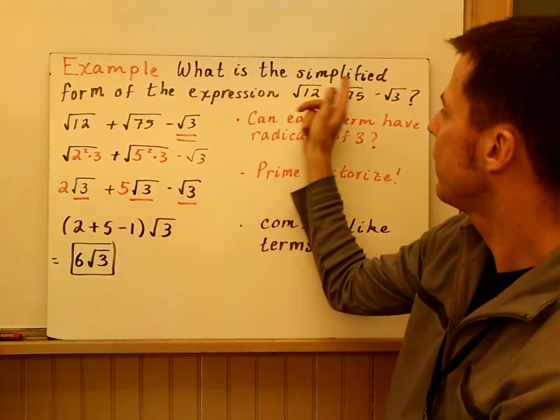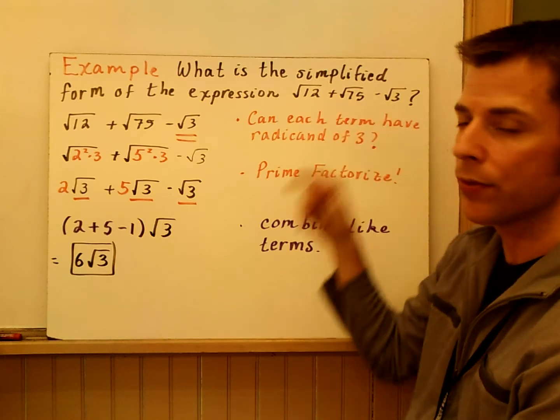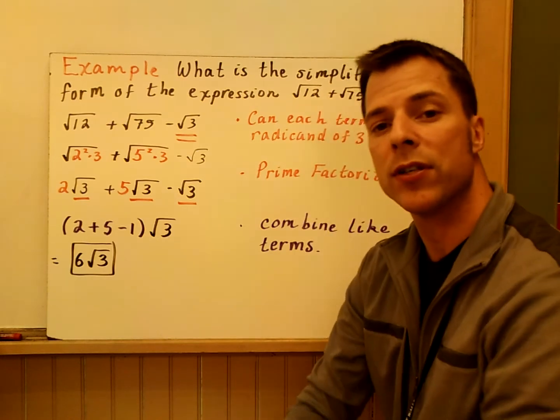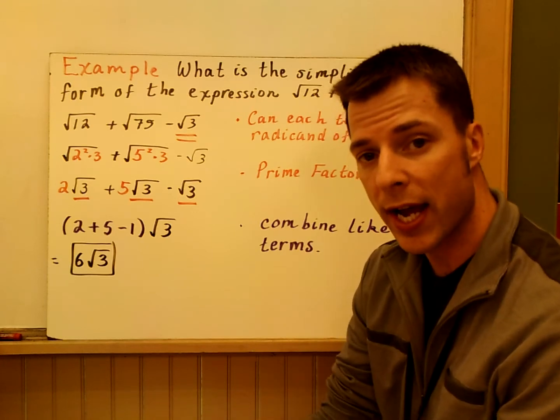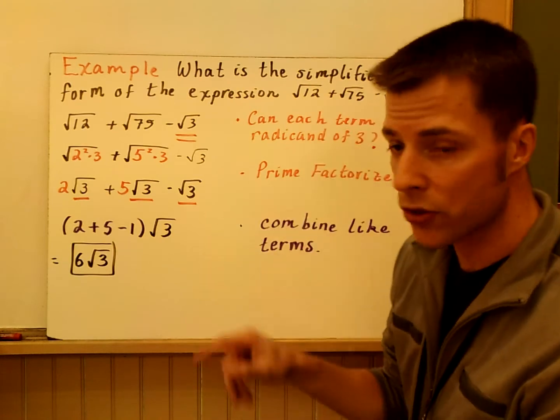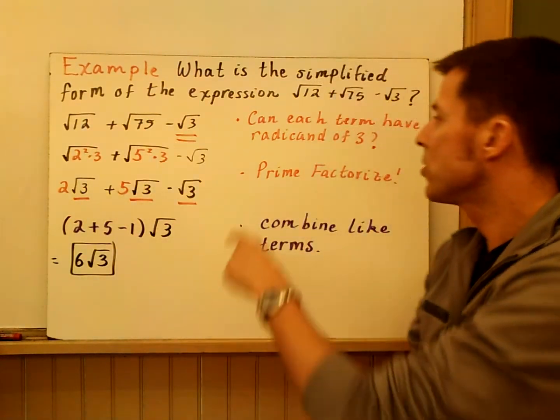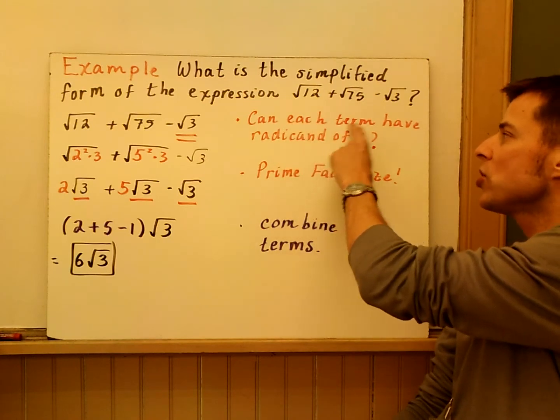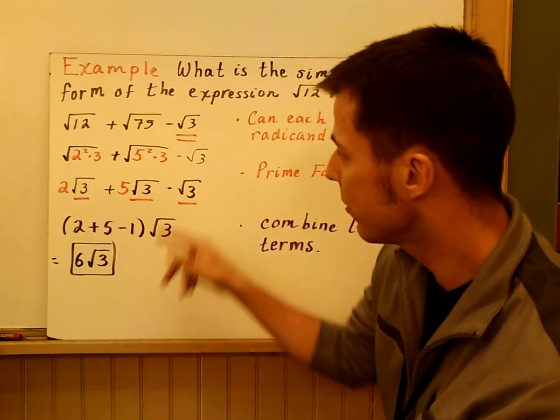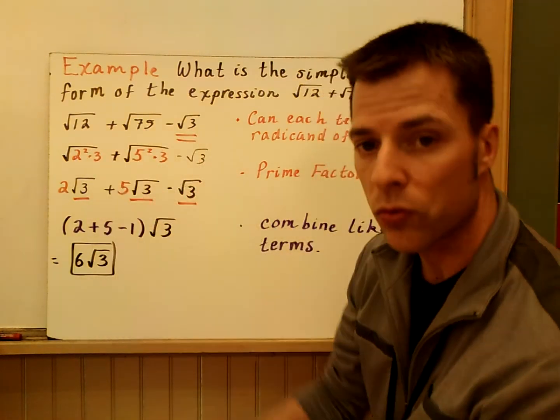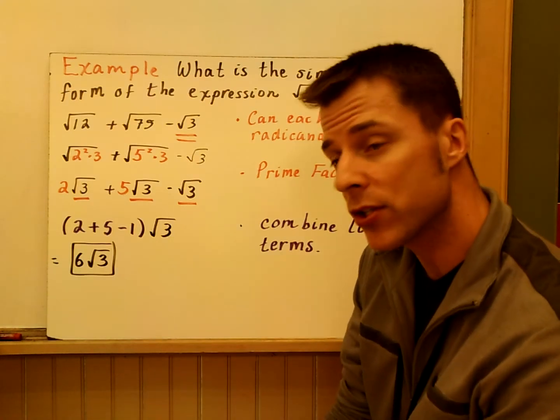What is the simplified form of the expression root 12 plus root 75 minus root 3? This is where you have to use that second part of the essential understanding and simplify before you add. Right now, you would say, well, they're all roots. They're square roots, but I can't combine them because they all have different radicands. So the idea becomes, can each term have a radicand of 3? The reason why I chose the radicand of 3 is because it's the smallest radicand. So can I rewrite the other radicals as a root 3? So let's check it out.